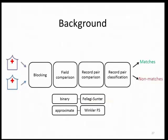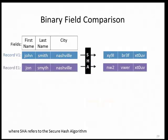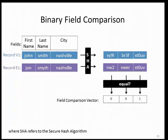I'll illustrate binary field comparison. We have a record pair with multiple fields, and the way binary field comparison is done in a privacy-preserving way is that records are sent through some encoding function such as a hash algorithm, producing a ciphertext representation of the values in each field. Strings that are similar in plain text — such as 'john' and 'john' spelled with a slight typo — end up being very different in the ciphertext space. You lose the ability to detect similarity and can only detect binary agreement. You ask: are these values equal? If not equal, assign a zero; if identical, assign a one. The result is a field comparison vector of binary values.